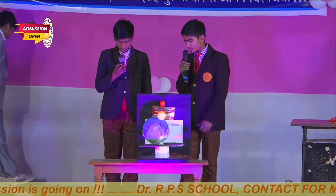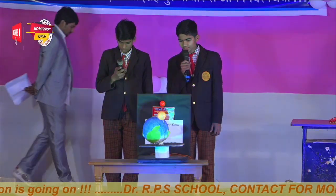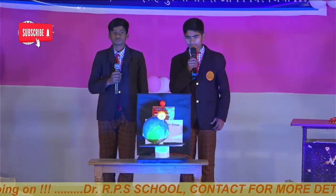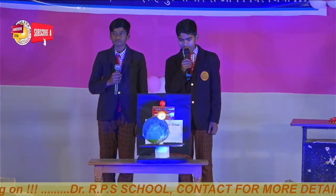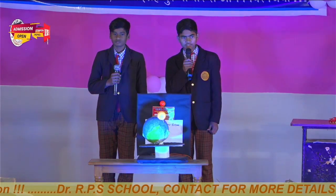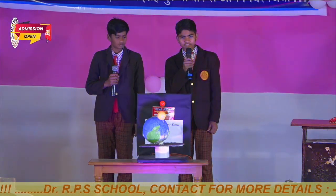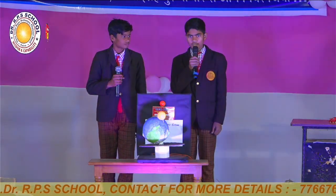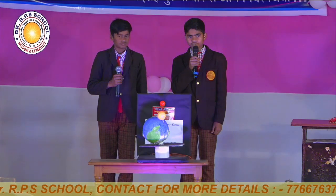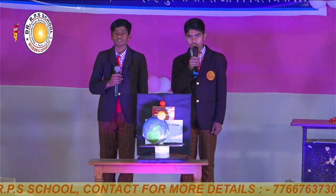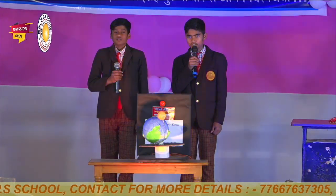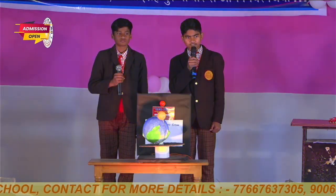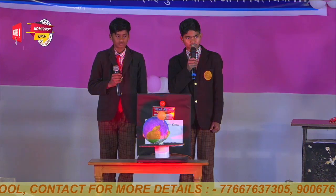Thank you Harsh for giving me a chance. First, I explain what is solar eclipse. Solar eclipse happens when the moon passes between the sun and earth, casting a shadow on earth that either fully or partially blocks sunlight in some areas. This only happens occasionally because the moon doesn't orbit in the same plane as the sun and earth.